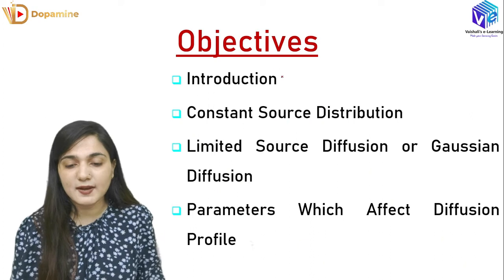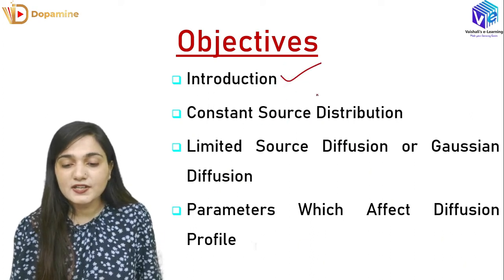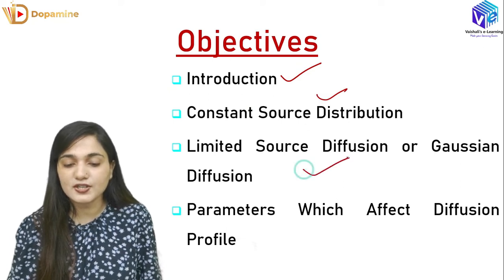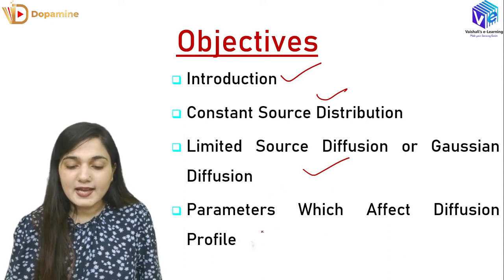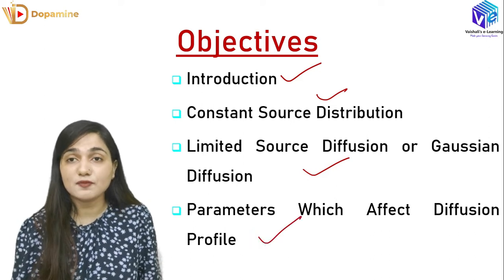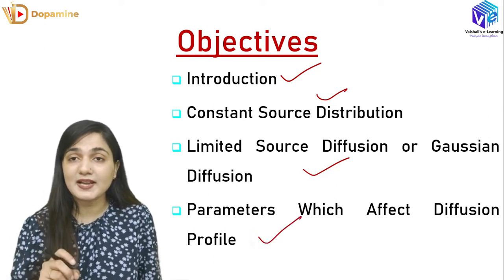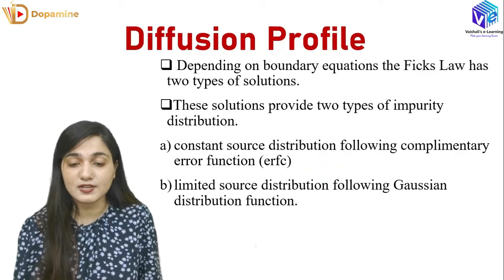First of all, we will see the introduction of diffusion profile. We will see the case of constant source distribution, then the limited source diffusion which is called Gaussian distribution. After that, we will see which parameters affect the diffusion profile. We will cover constant source diffusion and limited source diffusion in detail.